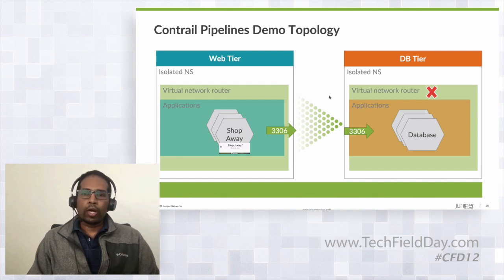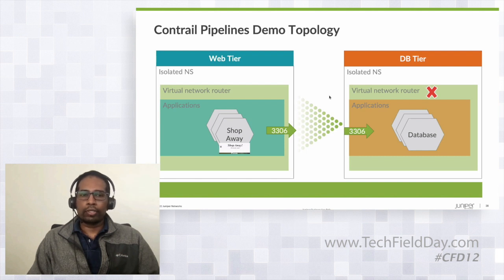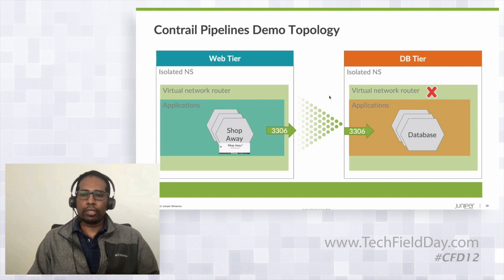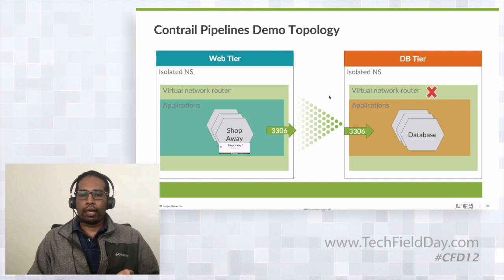As part of this demo, I will be creating two namespaces — which are pre-provisioned and isolated. I'll be creating the virtual network router in each of these namespaces. I've provisioned a WordPress app called ShopAway in the web tier, and a MySQL database application in the DB tier. The virtual network router in the DB tier hasn't been provisioned yet, which is why the ShopAway application is unable to access the DB tier on port 3306.